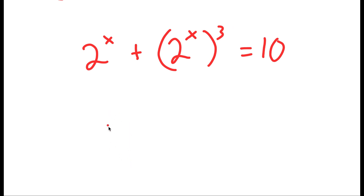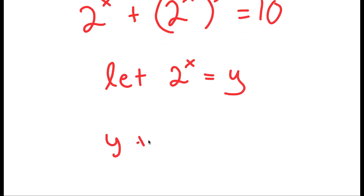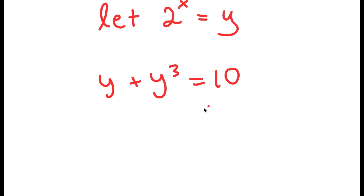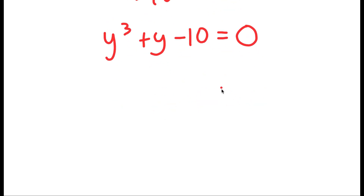Now from here, I'm going to let 2 to the power of x equal to the variable y. So now I get y plus y to the power of 3 is equal to 10. And if I subtract 10 on both sides, I get y to the power of 3 plus y minus 10 is equal to 0.